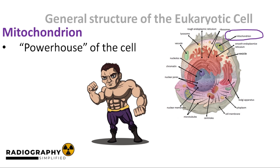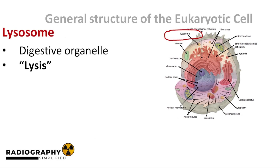Next, the mitochondrion. The cell needs energy to function, and this energy is produced in the mitochondrion through processes such as oxidative phosphorylation. Now the lysosomes — the real trash masters. Every organized unit needs a garbage disposal system. The lysosomes contain special digestive enzymes that break down DNA, proteins, and carbohydrates. They are very useful in the process of programmed cell death, known as apoptosis.